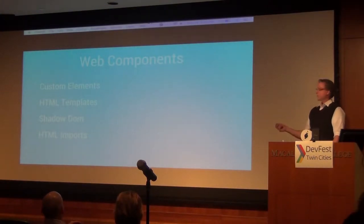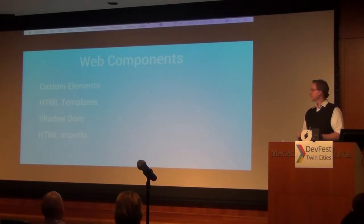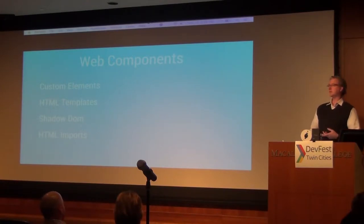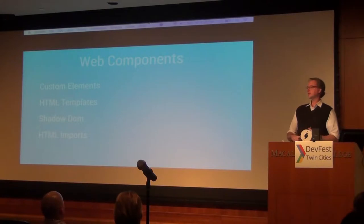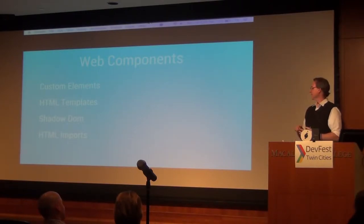Web components break down into four key elements: the ability to create custom elements, have HTML templates, the shadow DOM — which is about the coolest thing ever — and HTML imports.